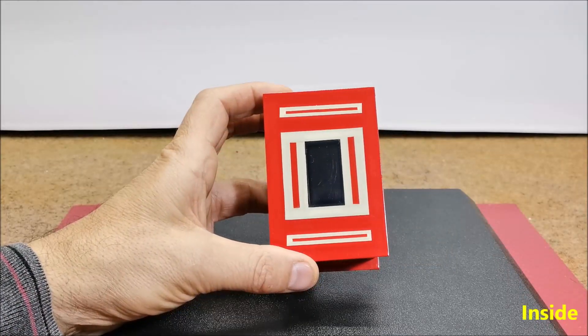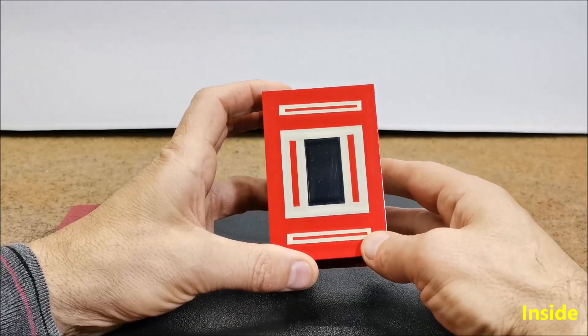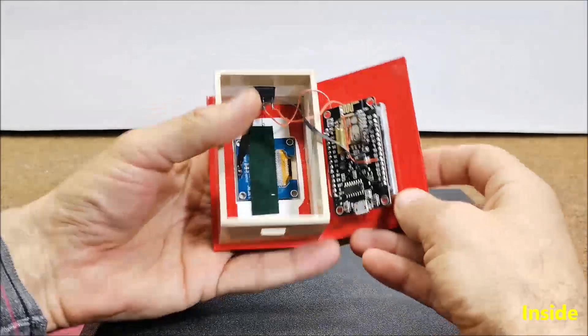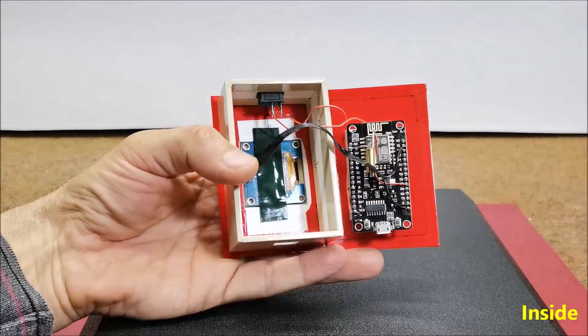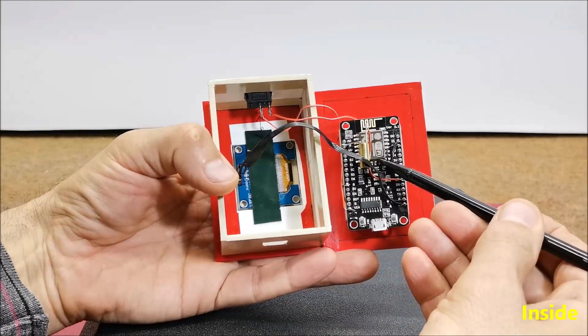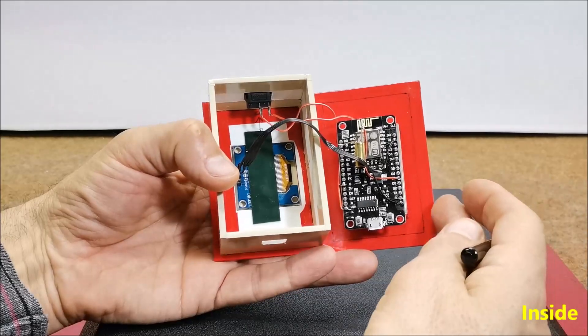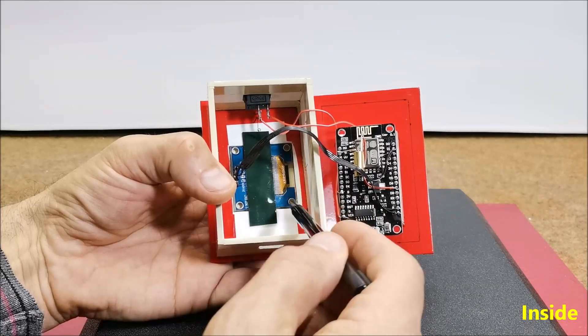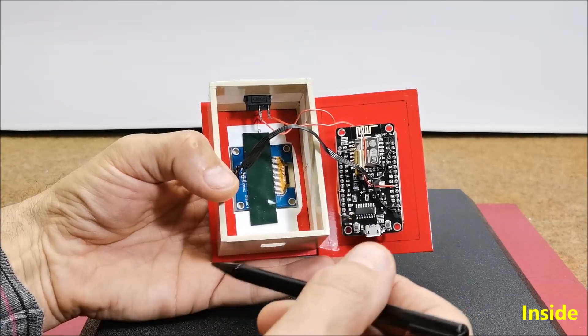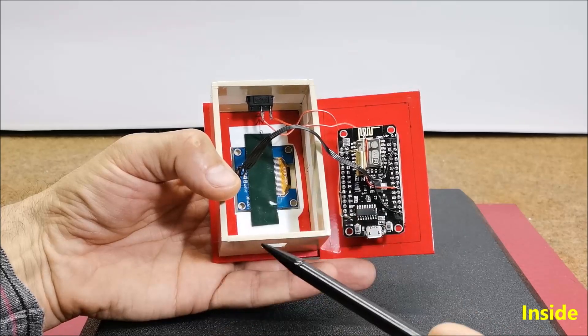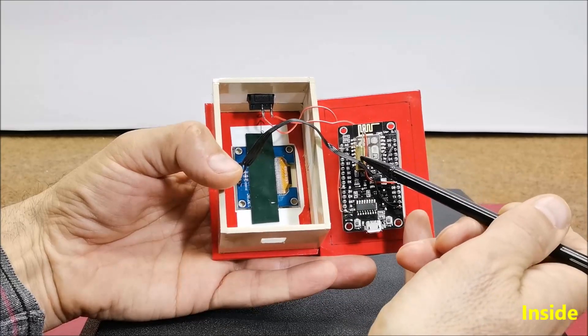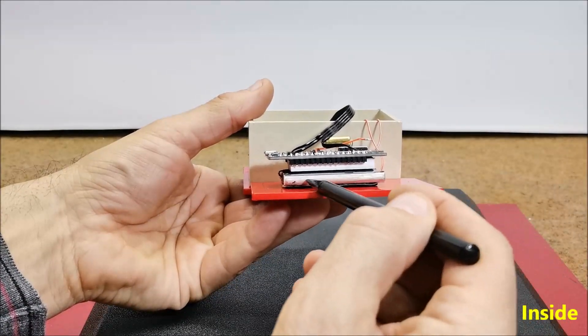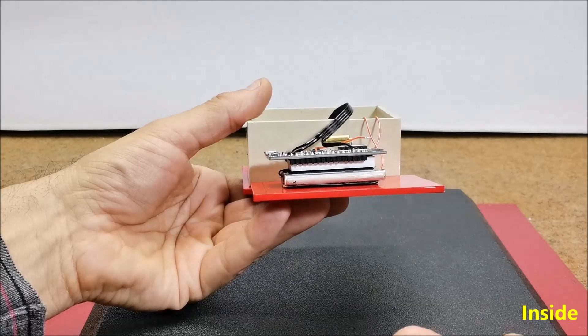The device presented in this project is extremely simple to make and consists of only three components. First ESP8266 microcontroller board. Then SH1106 OLED display with resolution of 128 by 64 dots, and tilt sensor. A single lithium cell is used to power the device.